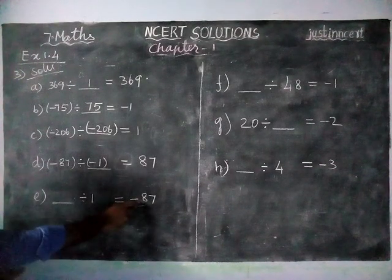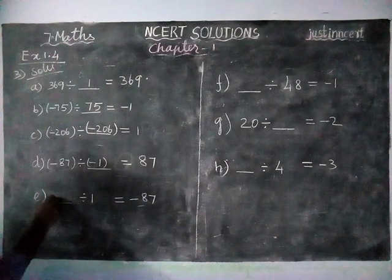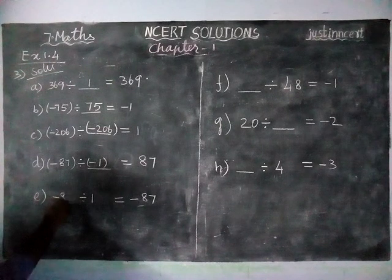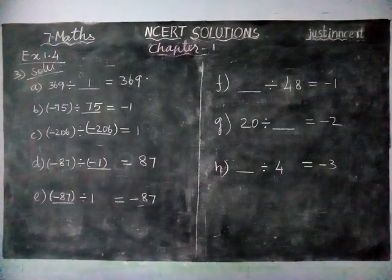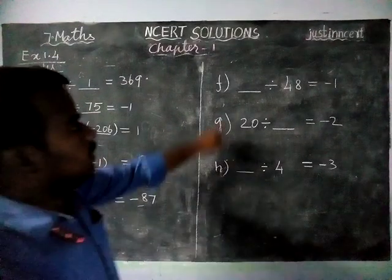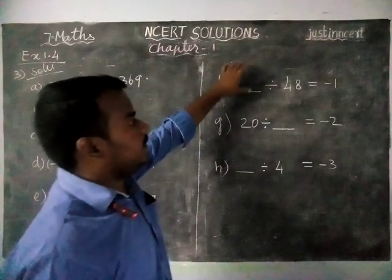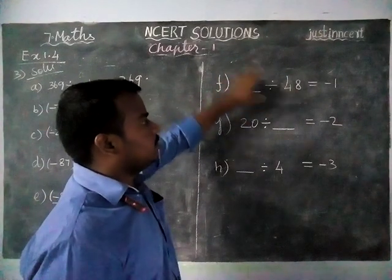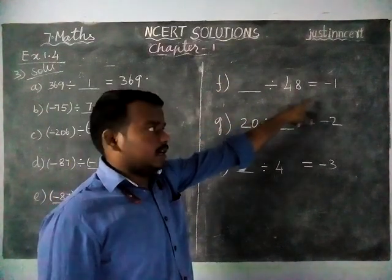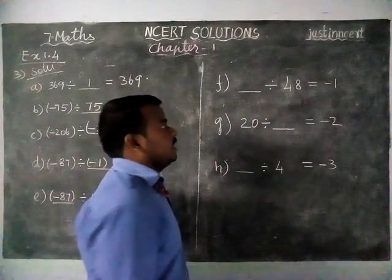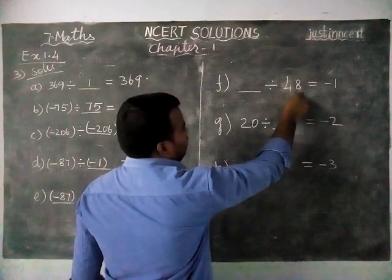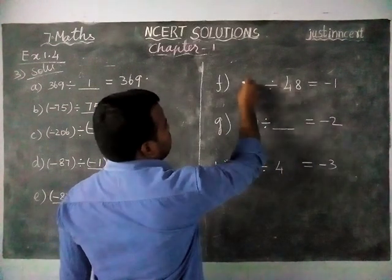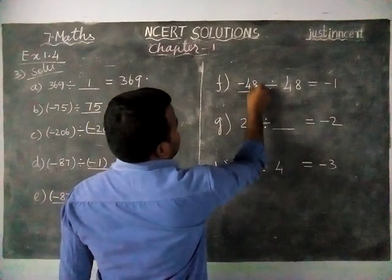This number has a plus sign so the answer for option e is minus 87. Next option f: when you divide a number by the same number you get minus 1. The same concept applies, but here this is plus 48, so the divisor will be minus 48.